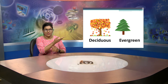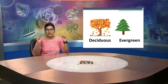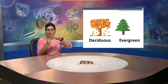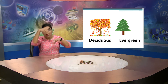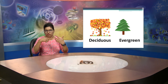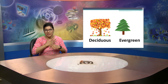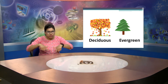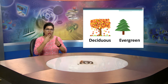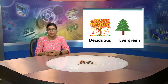Now on screen you can see two different pictures. The first is deciduous and the second is evergreen. Deciduous means that when the weather changes, the leaves of the tree fall down — so a deciduous tree has leaves that fall away as the weather changes. Evergreen means a tree in which the leaves remain green always.